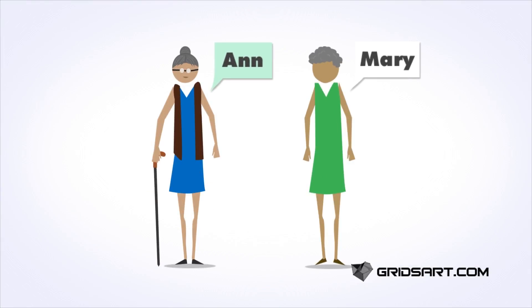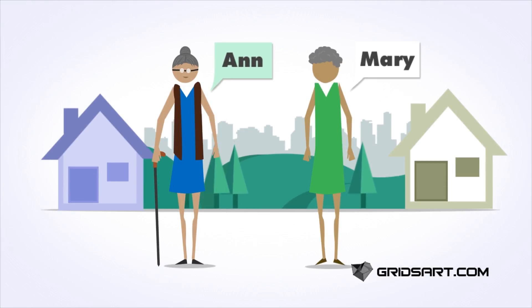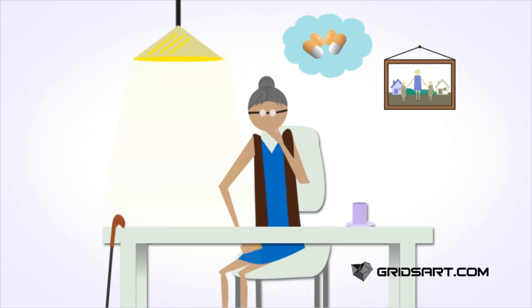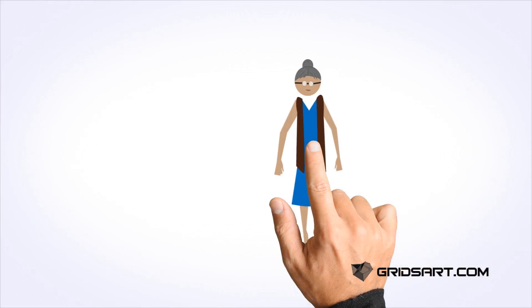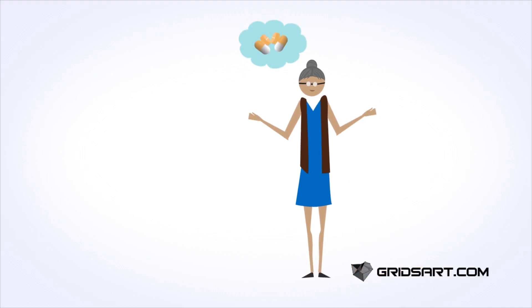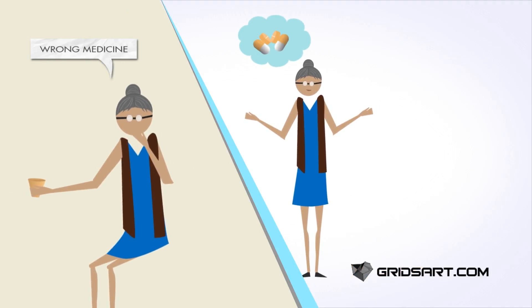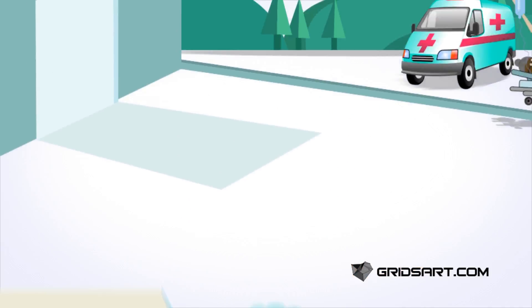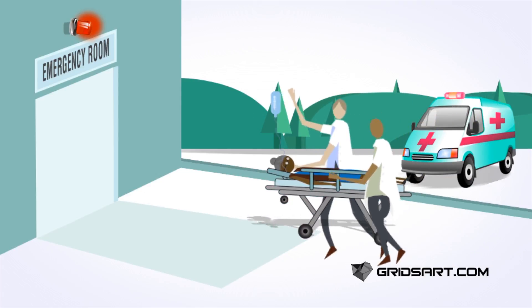Ann is Mary's neighbor. They both live independently. Ann follows a medical regimen and takes medicines at three different times a day. At times, she forgets to take her medicine or takes the wrong medicine. A couple of times, she went to the ER due to overdosage.